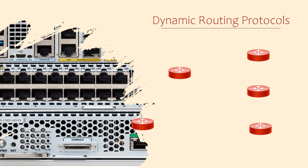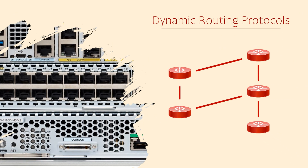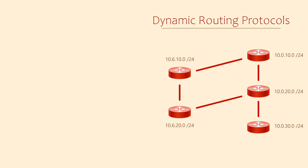The goal behind dynamic routing protocols is the same as with static routes — to build a valid routing table so a router can forward packets to the right place. But the approach they take is very different. When we configure a static route, we tell the router about a remote network and how to get there. This is a manual process, which can be a pain when you have a lot of routes.